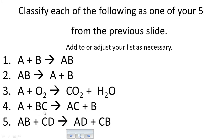Think of it this way: it's much like Kyle dancing with Christina, and then Louie comes over and says 'Kyle, go away' — now Louie starts dancing with Christina and Kyle is there all by himself. We've had one replacement — Louie replaces Kyle. In the diagram, A is replacing B. That's a single replacement reaction.